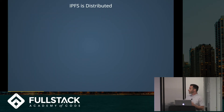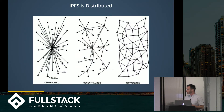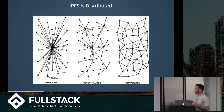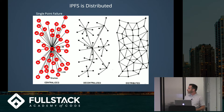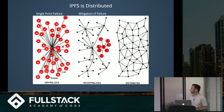So IPFS is distributed. You have a centralized system on the left-hand side with different stations connecting to the server. When the server goes down, the stations go down — that's a single point of failure. In a decentralized system, if a single server goes down, there's mitigation of failure. In a distributed system, when one goes down, the others are fine.